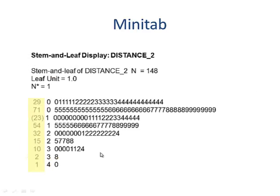Here's another example of a different variable. This is distance to Cincinnati State. And we can see that the leaf is 1. Therefore, the stem is going to be 10 times larger than that. So for example...